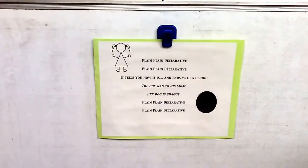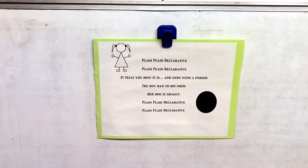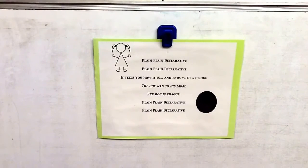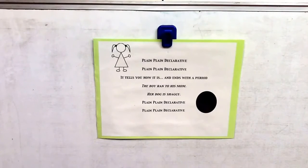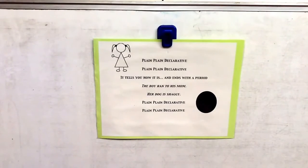Okay, boys and girls, yesterday we talked about what a sentence is. We learned that a sentence is a group of words that make a complete idea, and that sentence ends with a punctuation mark. Today we're going to begin our study of the different types of sentences.